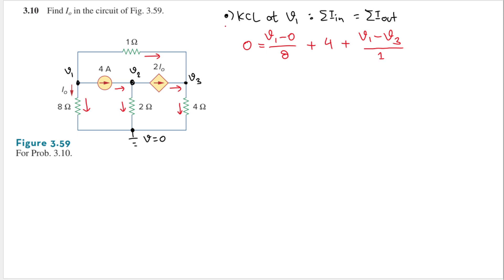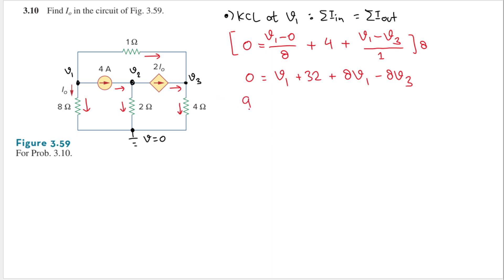To get rid of the denominator 8, I multiply both sides by 8. Zero times 8 is zero, the 8s cancel, giving V1 plus 32 plus 8(V1 minus V3) equals 0. Combining like terms: V1 plus 8V1 is 9V1, minus 8V3. Moving 32 to the right-hand side gives us 9V1 minus 8V3 equals minus 32. This is equation number 1.